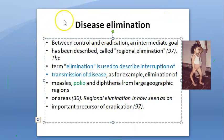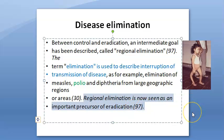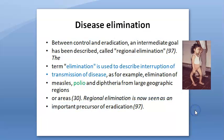We can also try to eliminate measles and diphtheria. This regional elimination is seen as an important precursor to eradication — you want to achieve eradication, so regional elimination should have happened first. Polio's current status is eliminated.